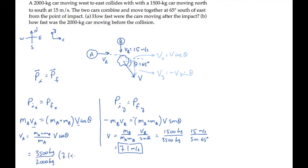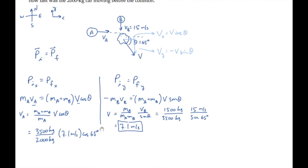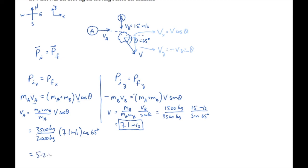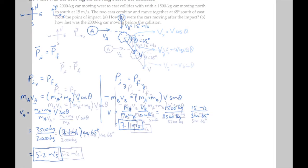When you calculate this, you find that before the collision, car A was moving at 5.2 meters per second. That's the answer to part B. Now let me zoom out so that you can see the whole solution.